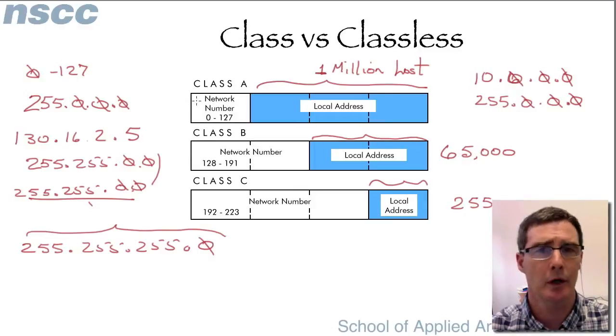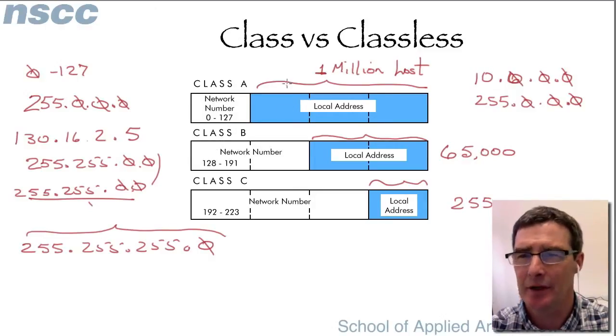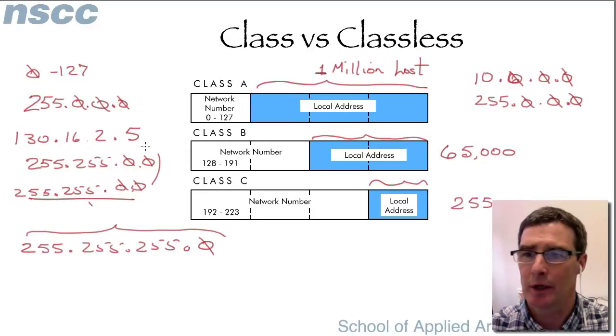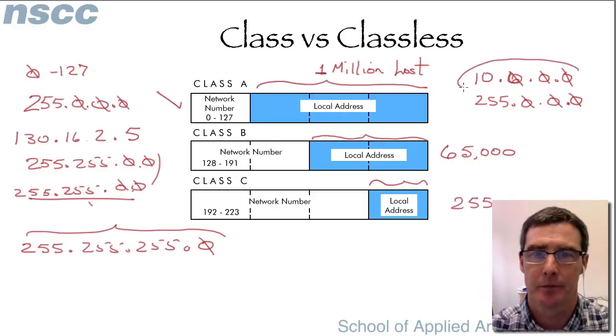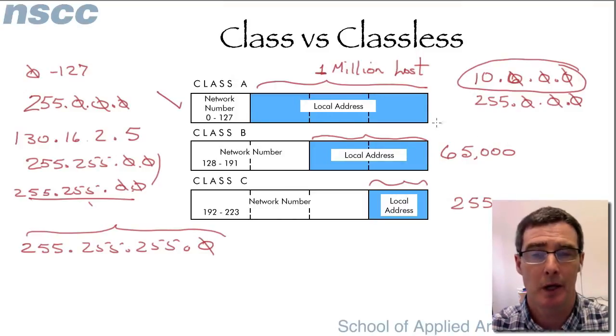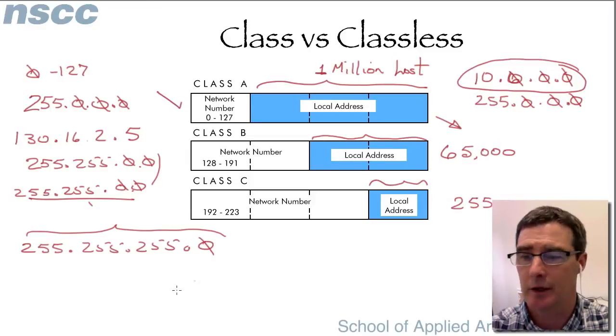Now that was in what we call classful addressing. Today that's not an efficient way to hand out IP addresses and we use something called classless addressing where we take any network address range that we're given and we can subnet it or break it up into smaller networks. For instance if you're given a class A network you could actually break this up into thousands of smaller networks which may all host just about a hundred machines. So learning to subnet addresses is very important. We're going to go over that in the next example.